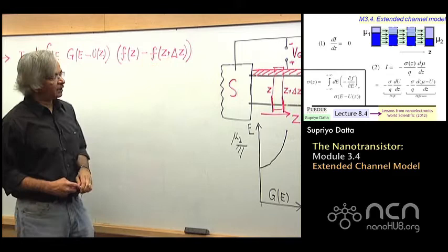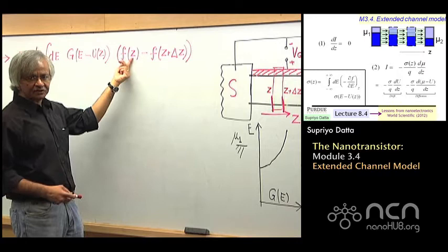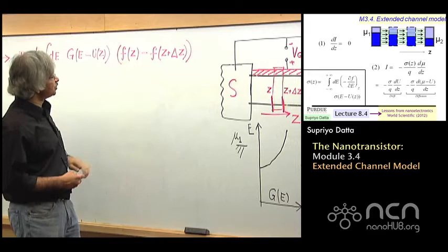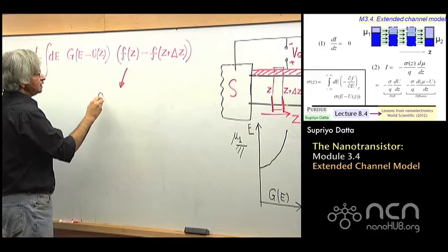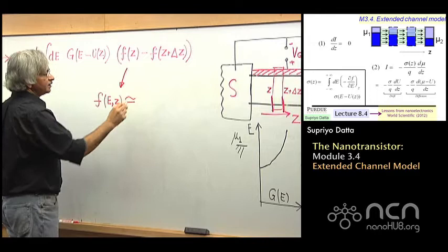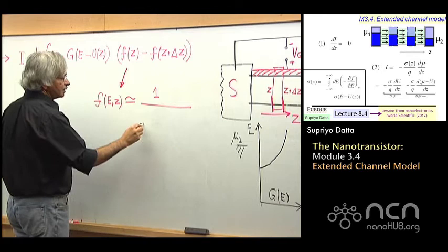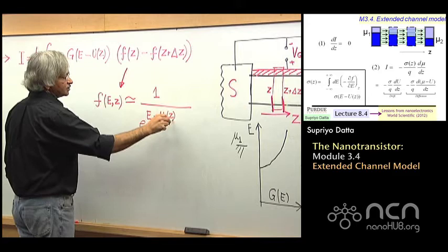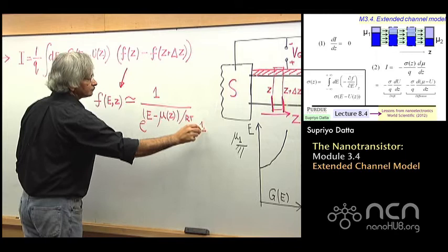So usually these things would not be equilibrium Fermi functions. What is often assumed — and this is usually a good approximation in many devices — is to assume that this distribution F of Z, the actual distribution of electrons in energy at point Z, can be approximately represented as something that looks just like a Fermi function but with a specific electrochemical potential mu of Z over kT plus 1.